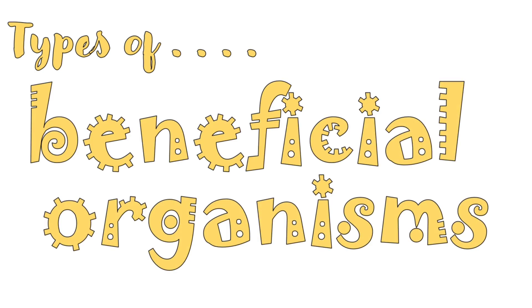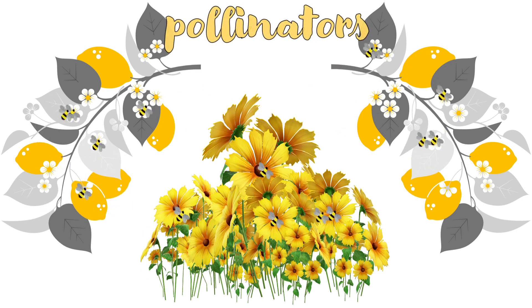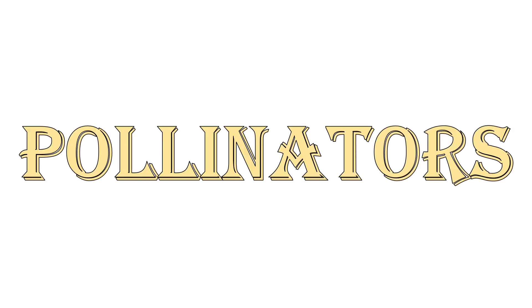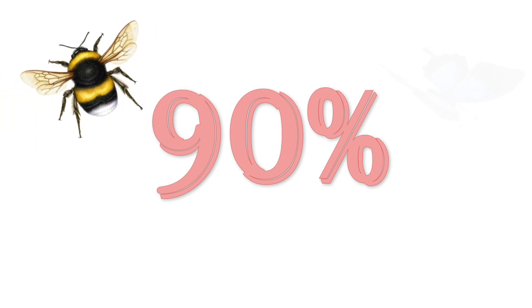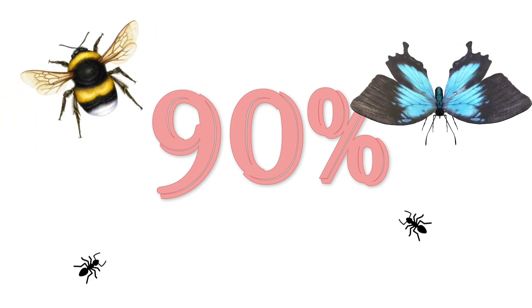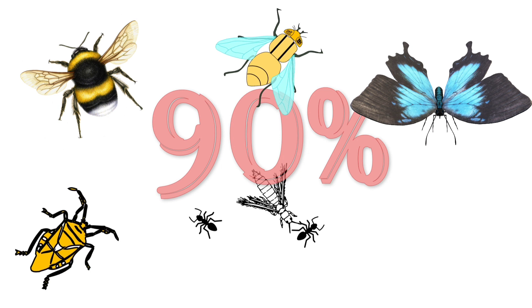There are different types of beneficial organisms according to their roles or uses. The first type is the pollinators. These are organisms that aid the pollination process, or the act of transferring the pollen grains from the male anther of a flower to the female stigma. Ninety percent of the pollinators are insects, but it is not restricted to bees and butterflies alone. Ants, flies, thrips, bugs, and beetles can also serve as pollinators.